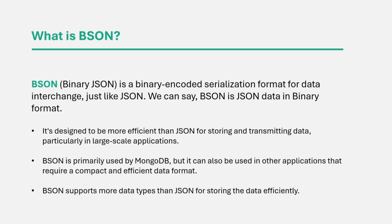These data types are not supported in JavaScript or JSON, where there is only one number data type. Based on the number we are trying to store in MongoDB, its BSON data type will be decided — whether it should be int32, int64, or double. You don't need to worry about BSON too much directly, since when using MongoDB shell or any driver, we mostly use JavaScript objects or JSON data. But you should know that your document will be stored in BSON format, and MongoDB will automatically add an underscore ID field with a unique ObjectID for each new document.